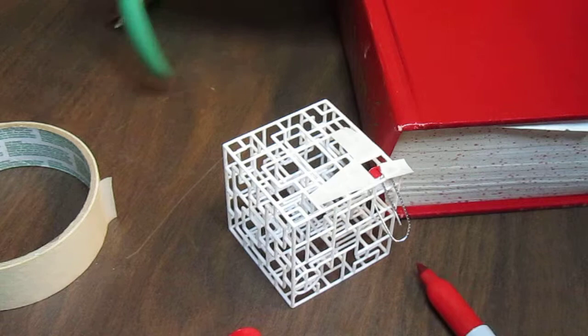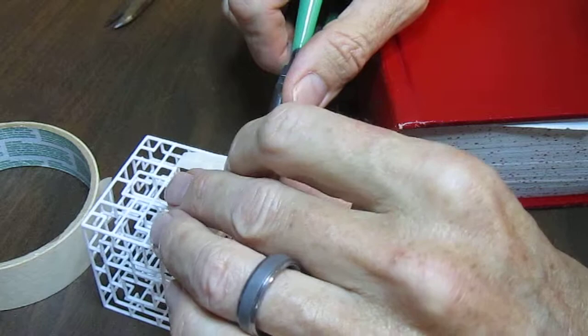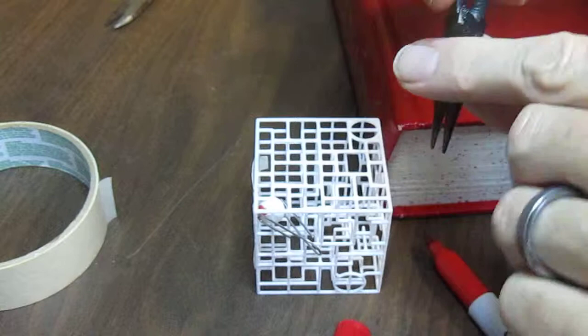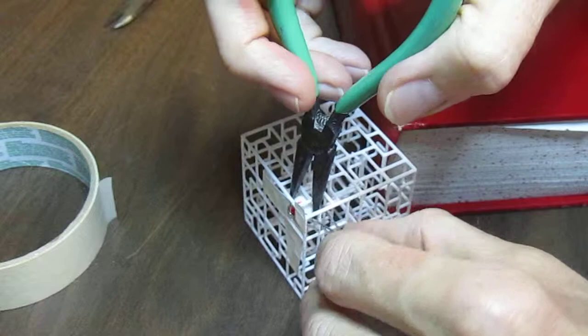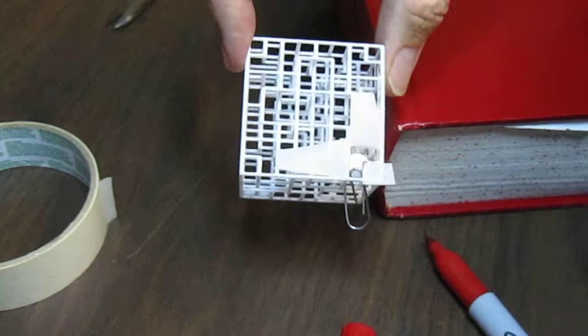Now, if you want to rotate the maze around, or rotate the ball around to get to another section, you can take a pair of pliers. Here you can see we can paint another section of the maze. But you can just grab the ball, hold it, and rotate the paper clip around. And now we've got another area of the ball exposed that we can paint.